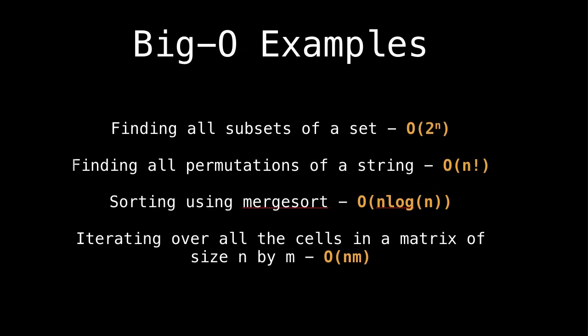So some other classic examples of Big O. So if we have to find all the subsets of a set, that takes an exponential amount of time, because there are 2^n subsets. Finding all permutations of a string takes Big O of n factorial. Another classic one is merge sort. So we have n times log n for your merge sort. And if we have to iterate over all the cells of an array of size n by m, we have Big O of n times m.